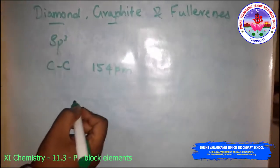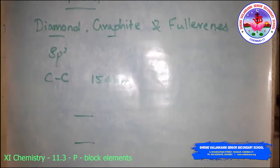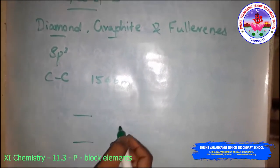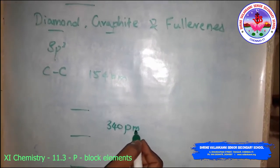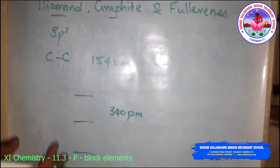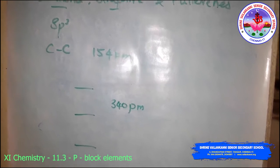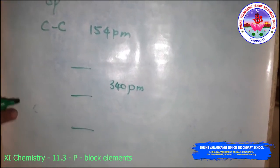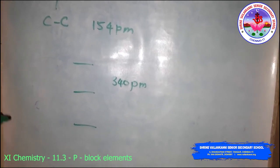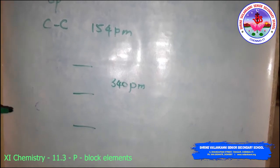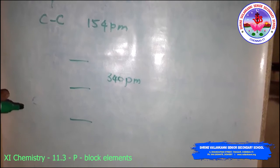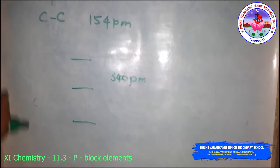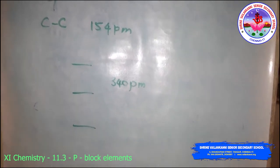Graphite has a layered structure. The layers are held together by weak van der Waals forces, with a distance of 340 picometers between layers. Each layer is composed of planar hexagonal rings of carbon atoms. The carbon-carbon bond within the layer is 141.5 picometers. Each carbon atom in the hexagonal ring undergoes sp2 hybridization and makes three sigma bonds to three neighboring carbon atoms. The fourth electron forms a pi bond, and these electrons are delocalized over the whole sheet.